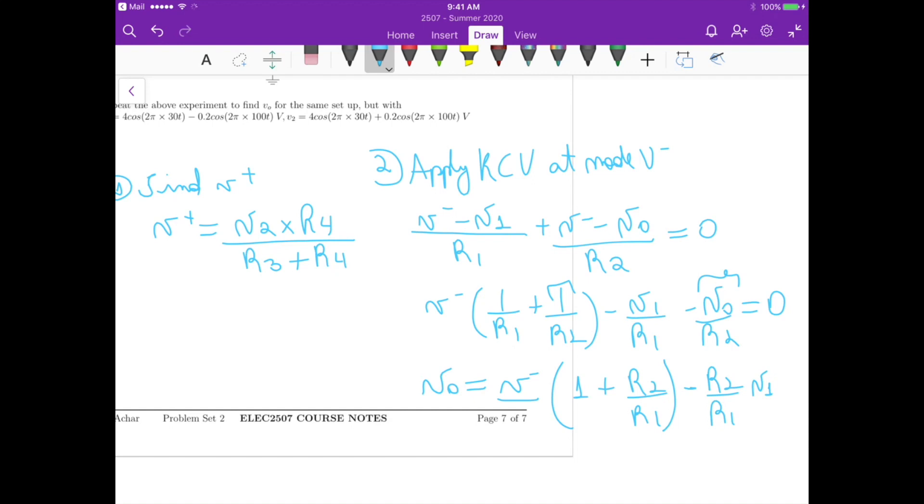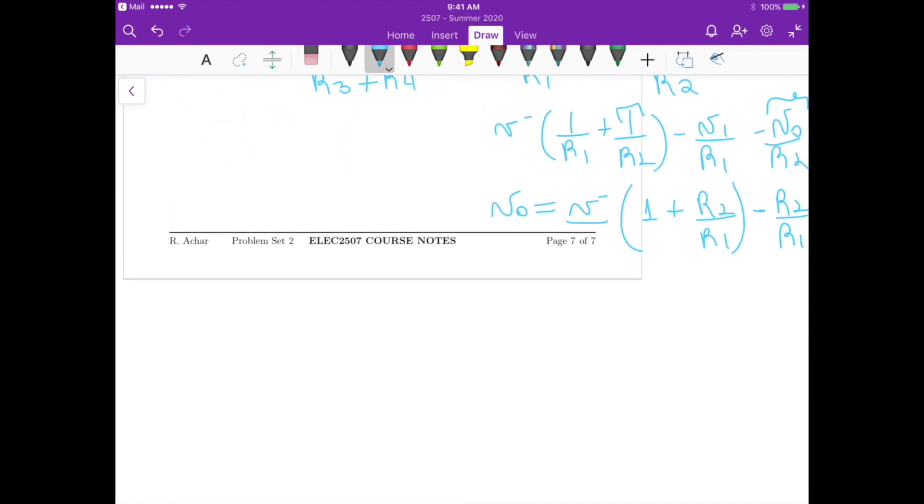Now we know the equation for V minus, because V minus is equals to V plus, so our final equation for V out is equals to V2 times R4 divided by R3 plus R4 times 1 plus R2 over R1 minus R2 over R1 times V1. So that's the equation for the first part.